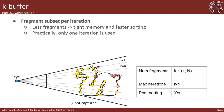The last construction approach is the k-buffer. This data structure reduces computation cost and memory consumption by capturing the k-best fragments in each iteration — usually the ones closest to the camera. In practical scenarios only a specific portion of the fragment pool is sufficient for plausible results. For example, in the case of transparency, one iteration is usually enough for producing the correct output.